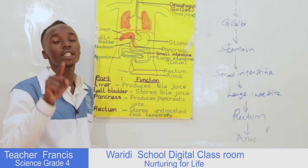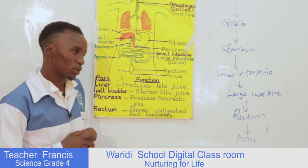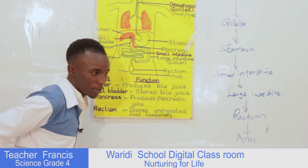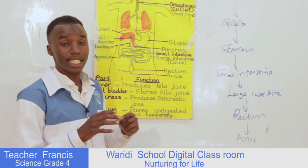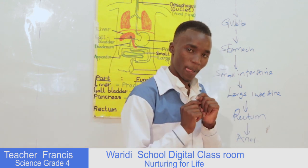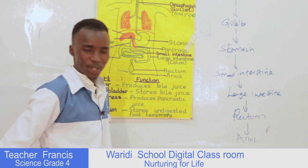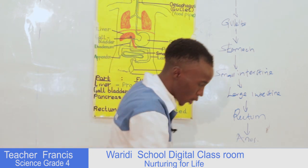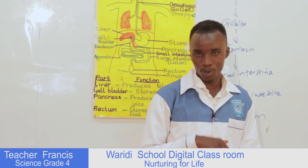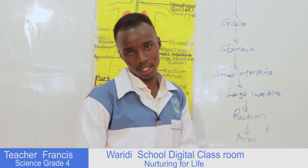The work of the rectum is to store undigested food temporarily — for about two to three hours. So when you take your breakfast, lunch, and supper, before you go to bed you feel like you want to go to the washroom — that means your rectum is full with undigested food. But the rectum does not remove it; the undigested food has to move from the rectum all the way to the anus. When you go to the washroom, you remove that undigested food through the anus. The anus is the last part of the alimentary canal — it helps us to pass out undigested food.